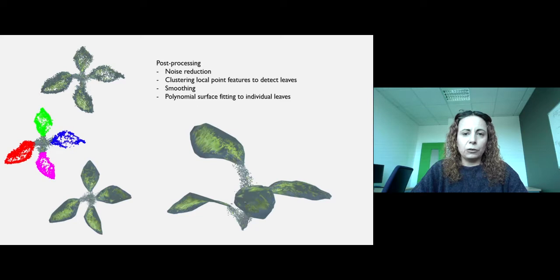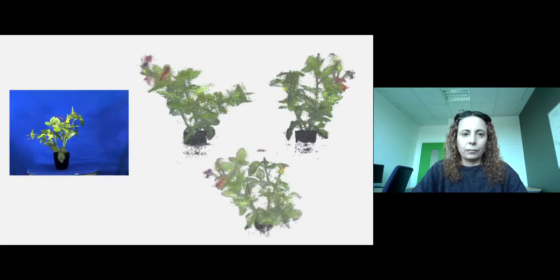We use local point features to cluster and detect the leaves, then apply smoothing and fit polynomial surfaces to individual leaves. Here's another plant on the turntable and its reconstructed 3D point cloud.